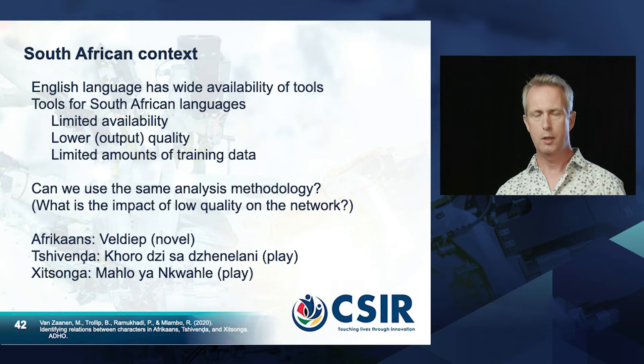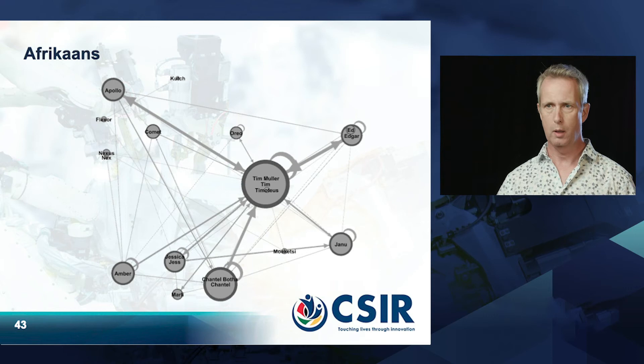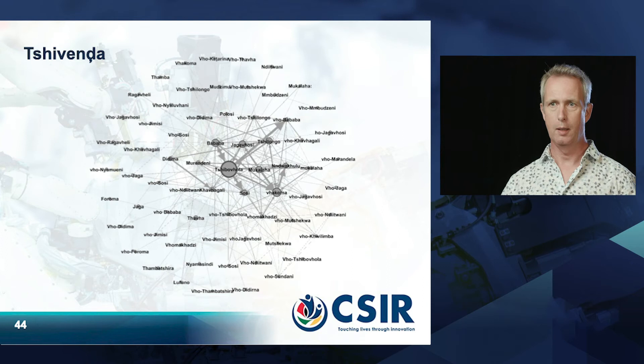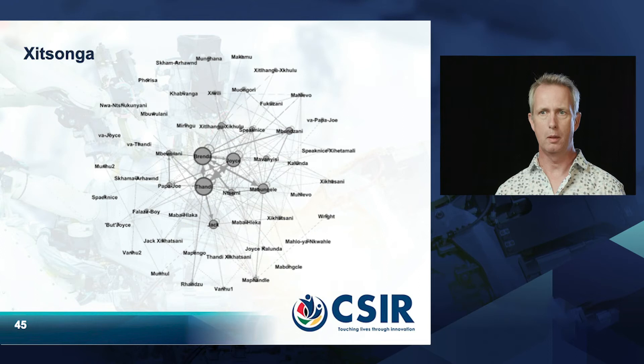The same approach was applied — identifying entities, finding relationships, and visualizing the network. For Afrikaans, the network seems to work well. For Chivenda, a colleague who speaks the language confirmed it was a good representation of the book. The same holds for Xitsonga — the system can produce nice networks describing the relationships between people in the books.